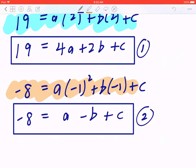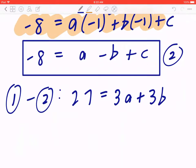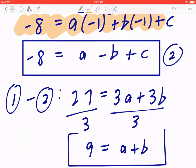Now, if you look at the two equations with three unknowns, the first thing you can do is eliminate c. So you can take equation number 1 minus equation number 2. This will give you 19 minus negative 8, that's going to be 27. 4a minus a is going to be 3a. 2b minus negative b is going to be 3b. If you divide both sides by 3, this will give you 9 equals a plus b. Again, let's put a box around this. I'm going to come back and solve two equations with two unknowns.